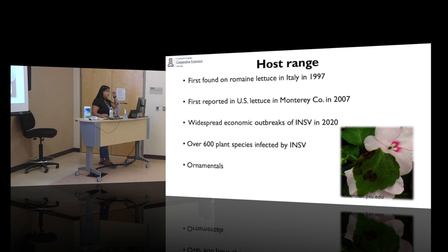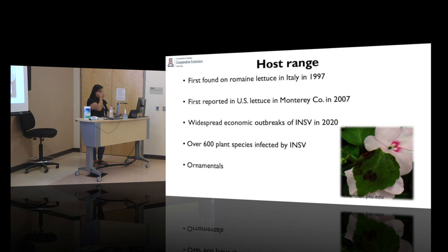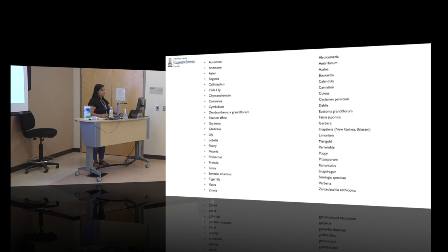INSV was first found in Italy in 1997 and first reported in the U.S. in Monterey County in 2007. There was a widespread outbreak in 2020. More than 600 plant species are infected by INSV, making understanding the epidemiology much more difficult. It is one of the most common diseases in the ornamental industry. The list of affected ornamentals is extensive — and it doesn't even include weedy species.